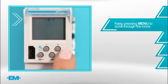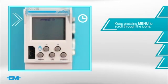Keep pressing menu to scroll through the icons at the top of the panel: Program, display and time modification. With the time modification icon flashing, press OK.